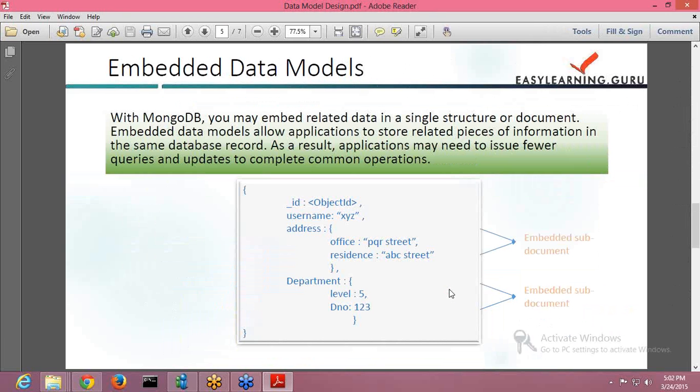Embedded data models—with MongoDB you have this facility to embed the data into a single structure or document. Embedded documents data models allow applications to store related pieces of information in the same database record. So if you have related data you do not have to keep it in four or five different places and then perform linking and lots of queries to fetch your data. You have this simple facility of embedding the documents and fetching it using a simple query. As a result, the application needs to issue fewer queries and updates to complete common operations. That is how your embedded data model in MongoDB works.